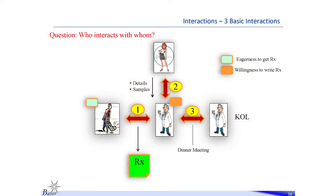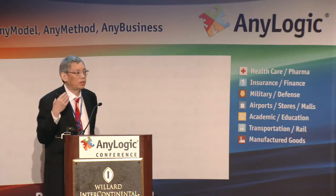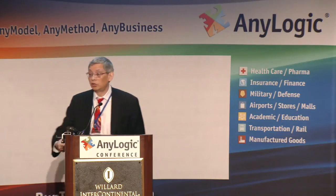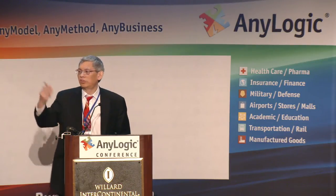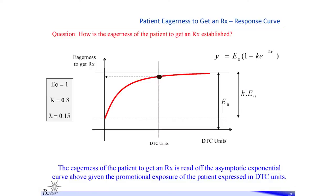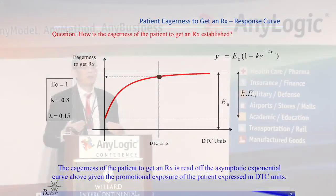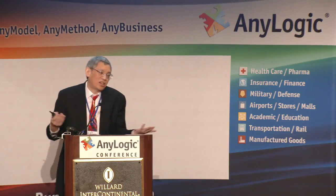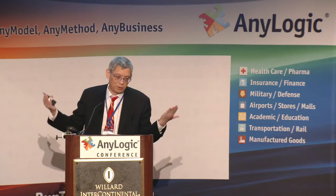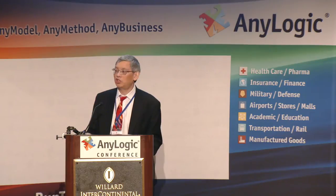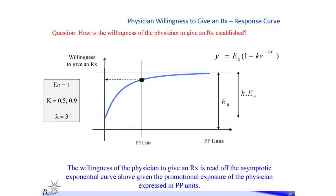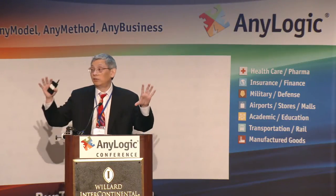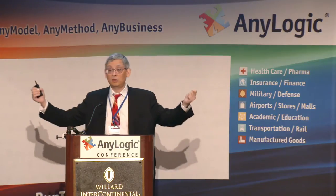The model gives physicians memory loss — they forget, which is why you send the rep again. We use a simple exponential distribution to capture this natural decay of information, and also a law of diminishing returns: if a rep calls two or three times, there isn't two or three times more propensity to write. There's asymptotic behavior. Symmetrically, the patient also gets exposed to DTC with the same exponential decay, giving us two nicely symmetric model components for patient and physician.